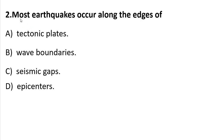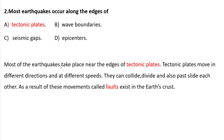Question 2: Most earthquakes occur along — A) the edge of tectonic plates, B) wave boundaries, C) seismic gaps, D) at the center. Most earthquakes take place near the edge of tectonic plates. Tectonic plates move in different directions at different speeds. They can collide, divide, and also pass by each other — that means move horizontally. As a result of these movements, faults exist in the Earth's crust, which is part of the lithosphere.